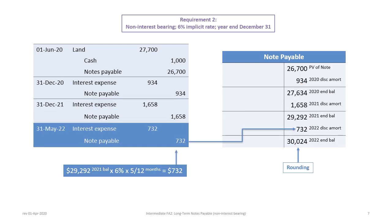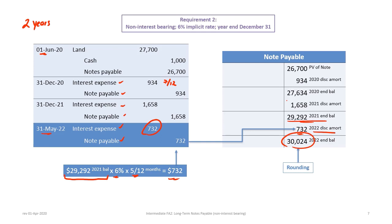Next is the final interest accrual before settlement. This two-year note starting June 1st, 2020 matures on May 31st, 2022. We record interest expense and note payable in the same manner as before. The amount is $732, calculated as: $29,292 ending balance times 6% times 5/12 months. Note that the first accrual used 7/12 months, and this one uses 5/12 — together accounting for a full 12 months around the intervening year-end. Adding $732 as the 2022 discount amortization gives a new ending balance prior to settlement of $30,024.